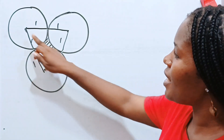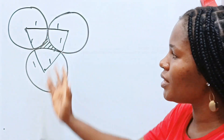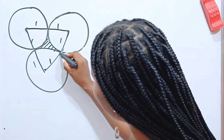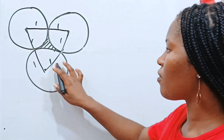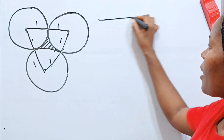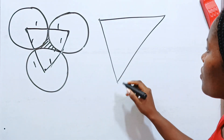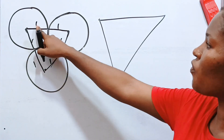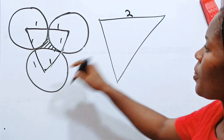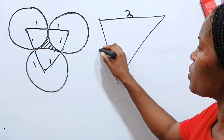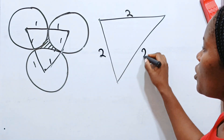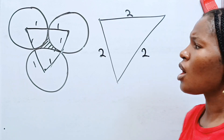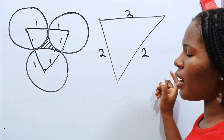So let me draw what we have here and join the centers. If I join these points, from center to center is 1 plus 1, which is 2. So from here to here is 2, from here to here is 2, and from here to here is 2 as well. So we can see that we have an equilateral triangle.